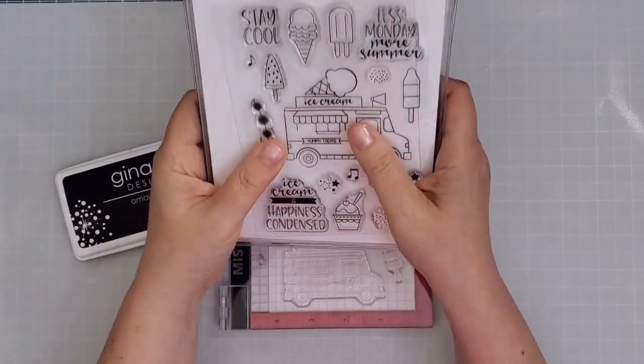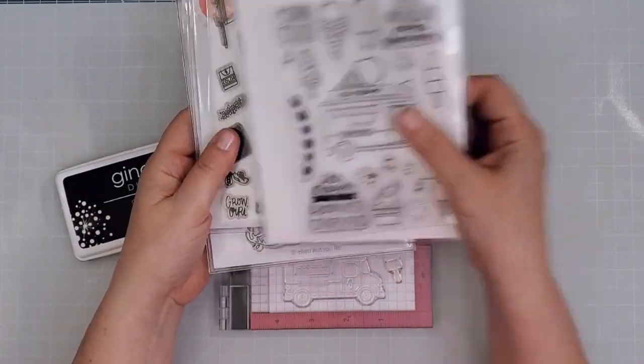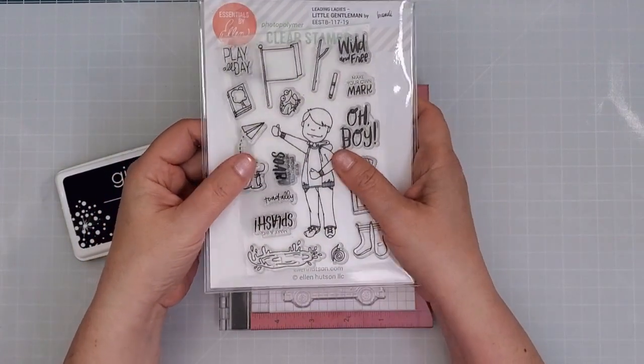To make my card I used the truck, a sentiment, and some ice cream from Catherine's new Ice Cream You Scream set and I paired them up with the Essentials by Ellen Little Lady and Little Gentleman.